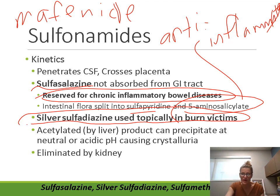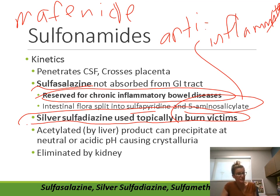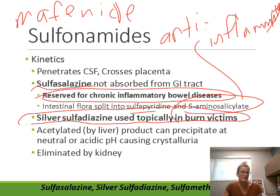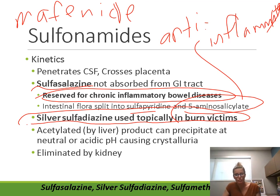Sulfonamides are acetylated by the liver, but the metabolite can precipitate in the urine at neutral or acidic pH, potentially causing crystalluria — stone formation that can damage the kidneys. The metabolites are eliminated by the kidney, so dose adjustment may be needed in renal failure.